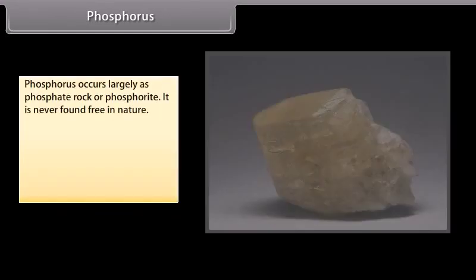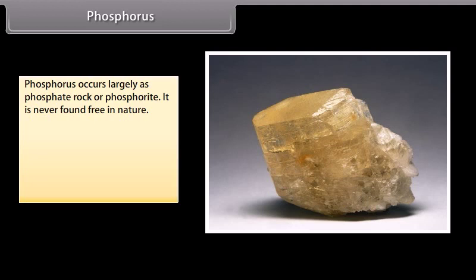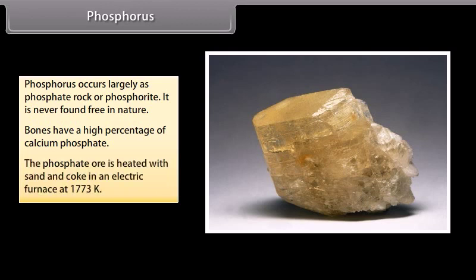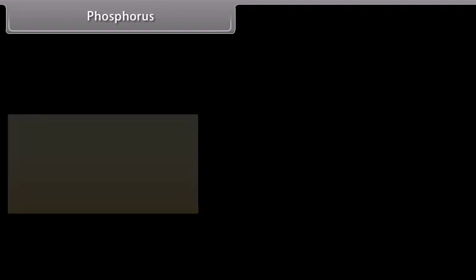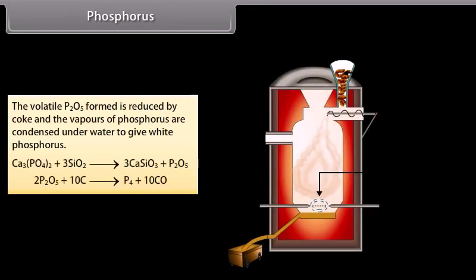Phosphorus occurs largely as phosphate rock or phosphorite and is never found free in nature. Bones have a high percentage of calcium phosphate. The phosphate ore is heated with sand and coke in an electric furnace at 1773 K. The volatile P2O5 formed is reduced by coke, and the vapours of phosphorus are condensed under water to give white phosphorus.